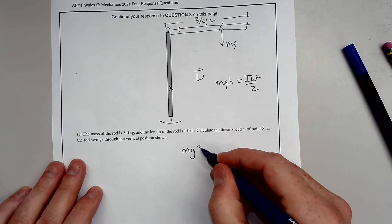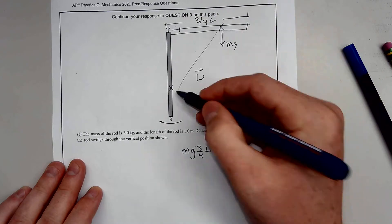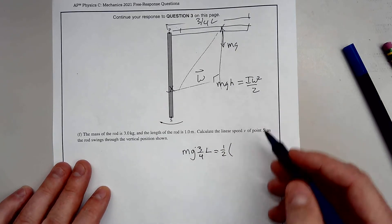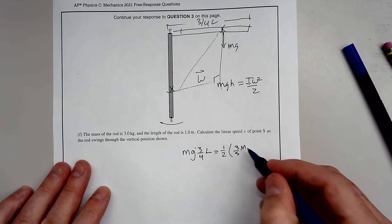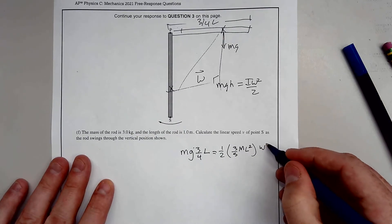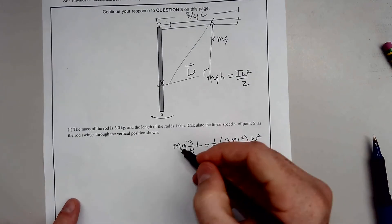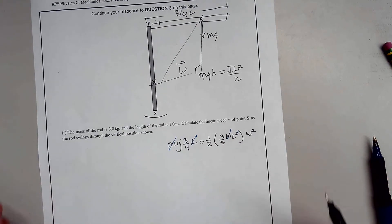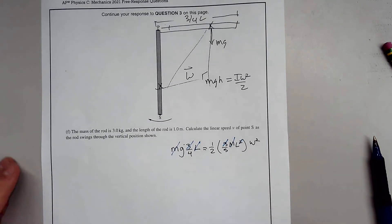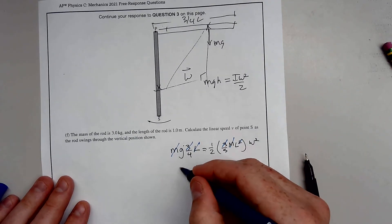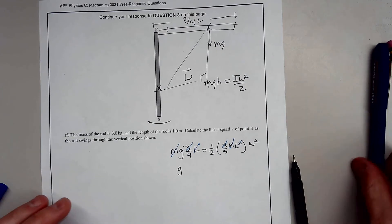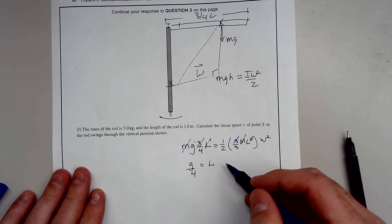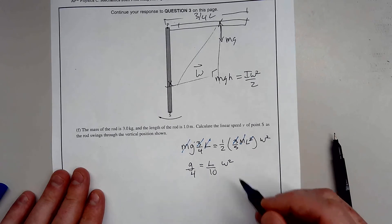This equals one-half times I. We found I before as three-fifths ML squared, times omega squared. The M's cancel, and one L cancels with the L squared, leaving us with three-fourths G equals three-tenths L omega squared.